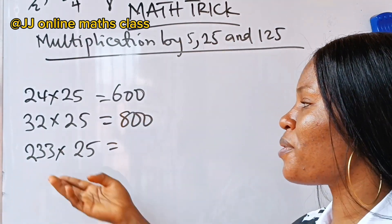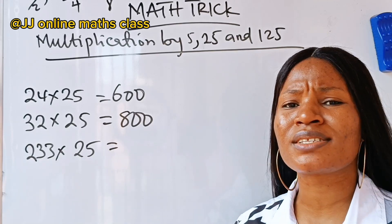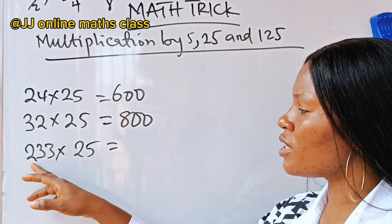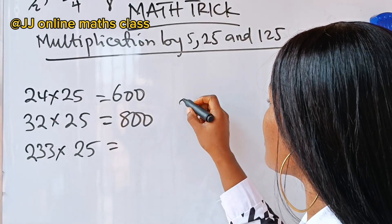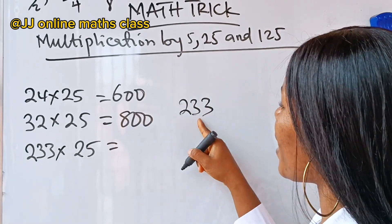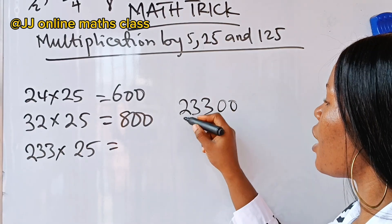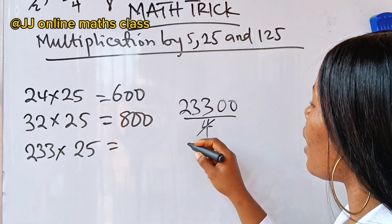Now, like I said, you can use three-digit numbers. It can be even. It can be odd. The same method applies. So, this 233 can be written as 233. If you multiply it by 100, just add two zeros in front of the 233, then you divide by 4.